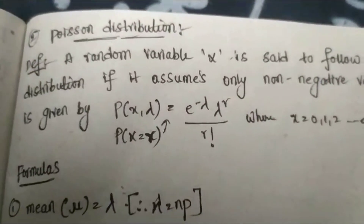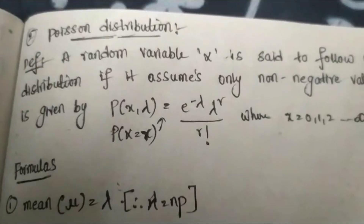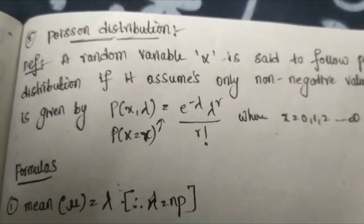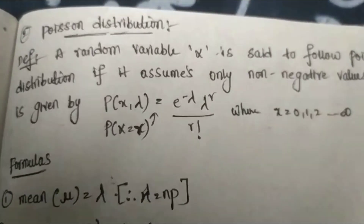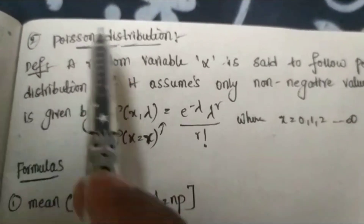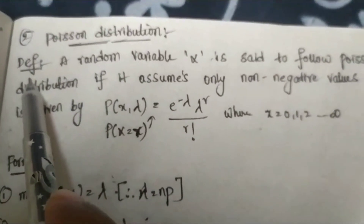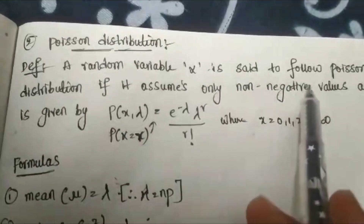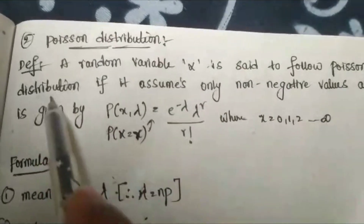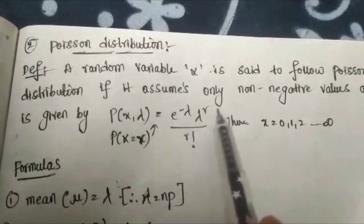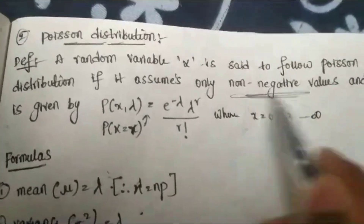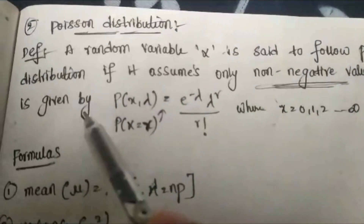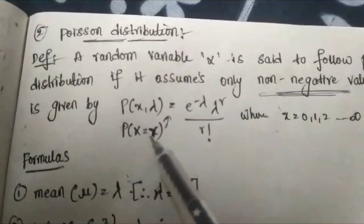Hello guys, welcome to my YouTube channel. In the previous video we discussed binomial distribution. In this video we will discuss Poisson distribution. The definition: a random variable X is said to follow Poisson distribution if it assumes only non-negative values, and is given by P(x) equals...